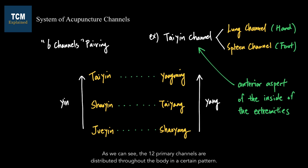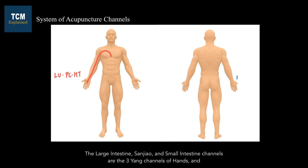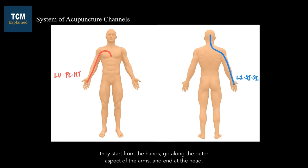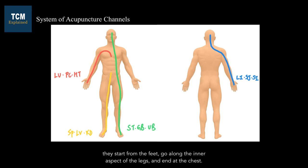As we can see, the 12 primary channels are distributed throughout the body in a certain pattern. Now let's look at how they are connected to each other to form a complete circuit. The lung, pericardium, and heart channels start from the chest, go along the inner aspect of the arms, and end at the hands. The large intestine, sanjiao, and small intestine channels start from the hands, go along the outer aspect of the arms, and end at the head. The stomach, gallbladder, and bladder channels start from the head, go along the outer aspect of the legs, and end at the feet. The spleen, liver, and kidney channels start from the feet, go along the inner aspect of the legs, and end at the chest.